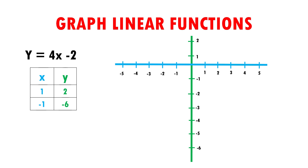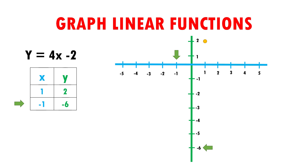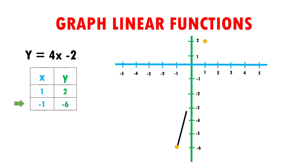Let's do it! I am going to start with the first coordinate. I place 1 on the x-axis and 2 on the y-axis. I draw lines and they intersect — here I have my first point. Now I go with the second point. I look for minus 1 on the x-axis and minus 6 on the y-axis. I draw lines and when they intersect, here I have our next point. I already have the graph of this linear function.